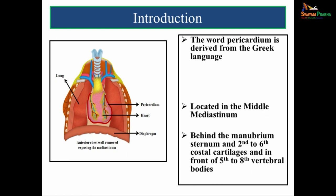The word pericardium is derived from the Greek language. Peri means around and cardium refers to the heart. So put together, pericardium is a covering around the heart. The pericardium is located in the middle mediastinum, behind the manubrium, sternum and second to sixth costal cartilages, and in front of fifth to eighth vertebral bodies.